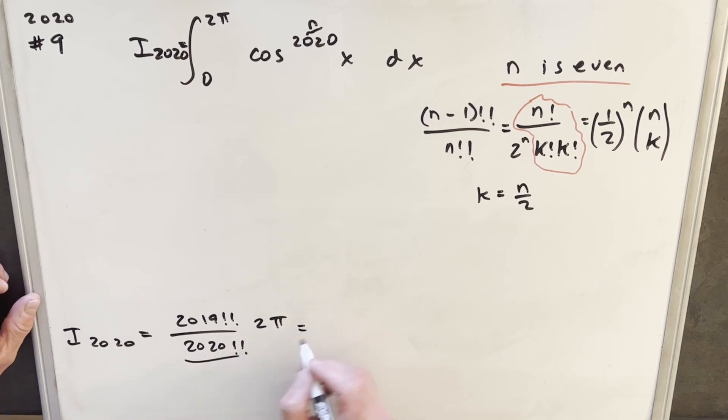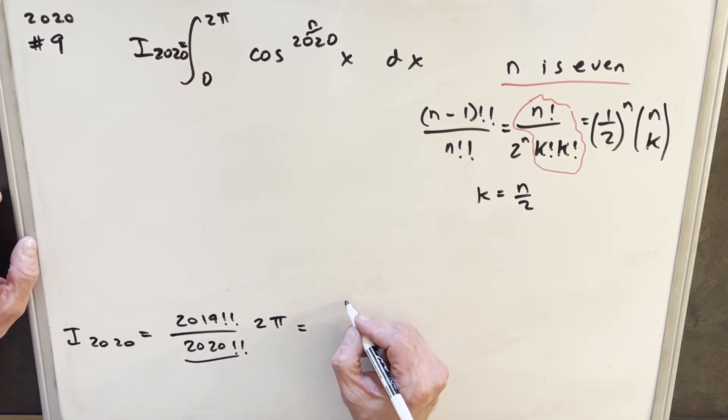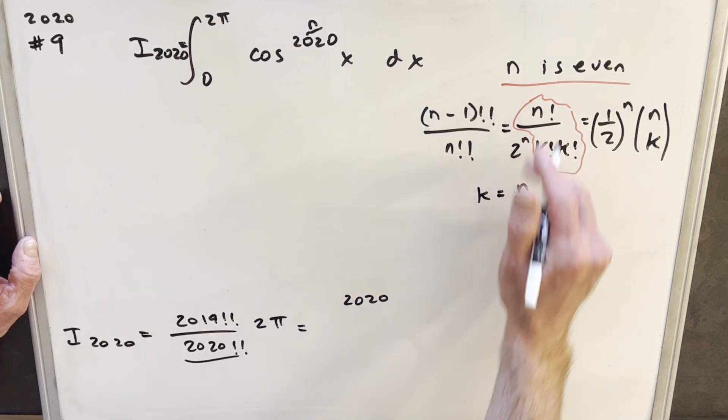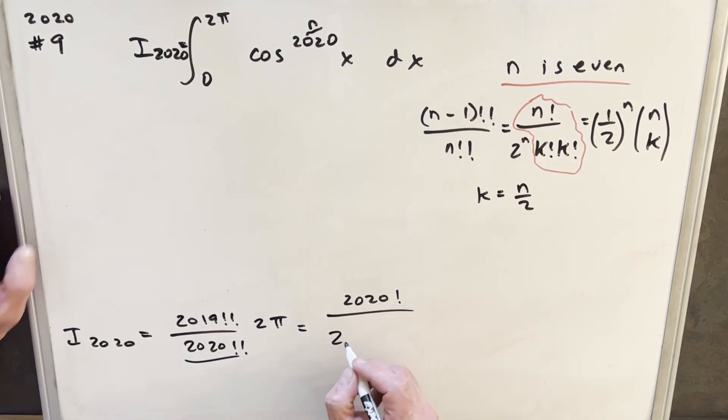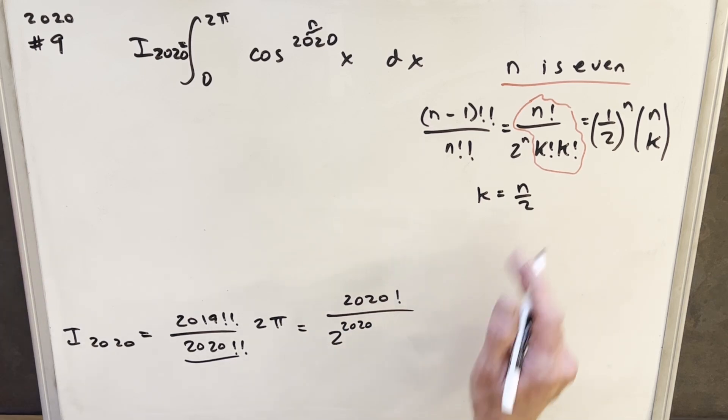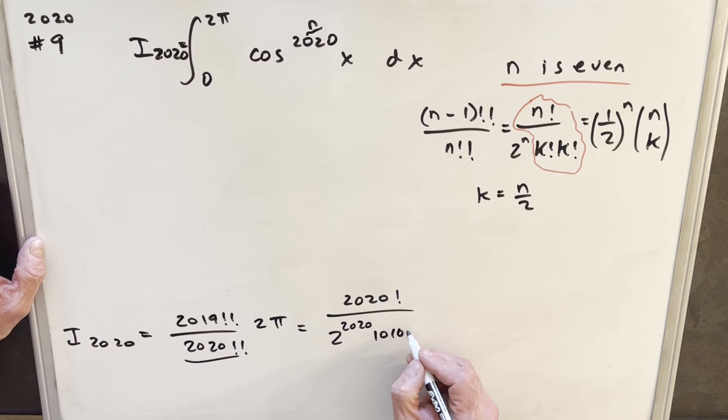So then what we can do is we can take this part and use this formula. So our n is 2020, so we're going to have 2020. Using this we're going to have 2020 factorial, 2 to the n, so we're going to 2 to the 2020, and then our k in this case is going to be 1010 factorial, and then we'll have our 2 pi.